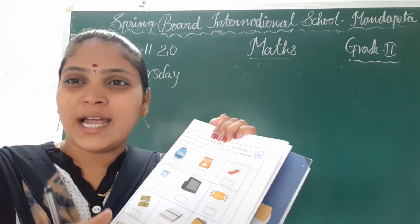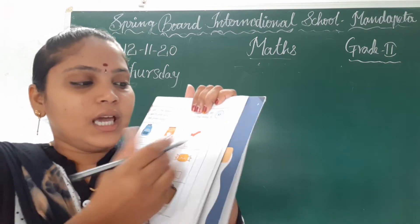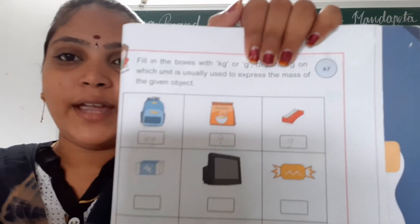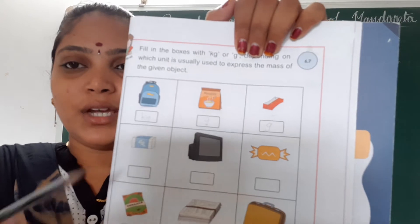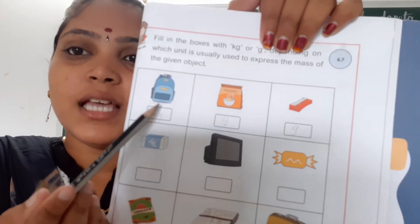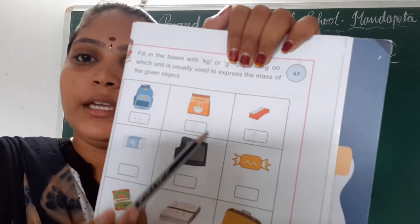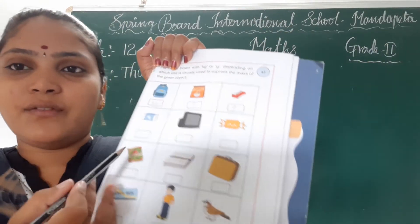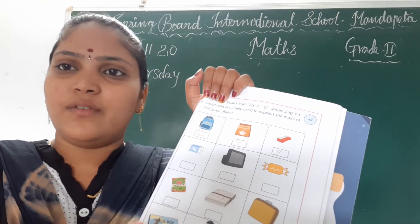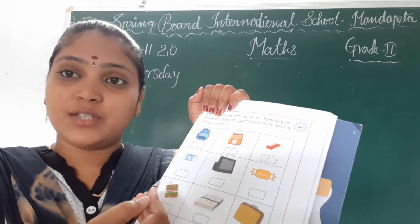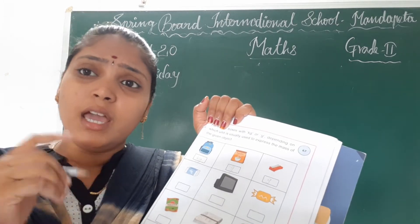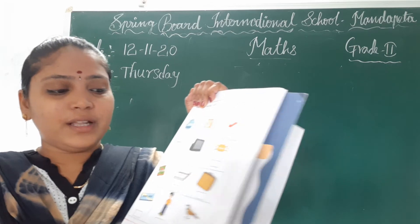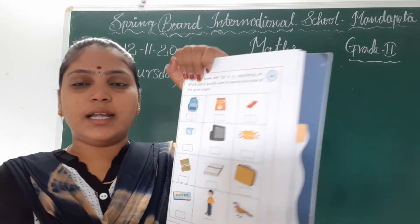Here, shortener is a very light object, so we are using kilograms and grams. You have to fill the whole table like this, children.